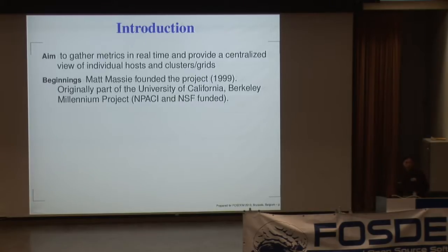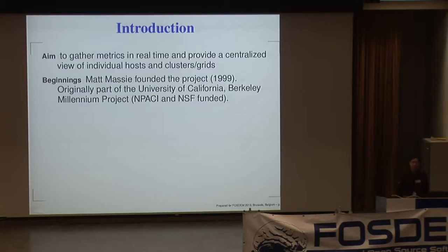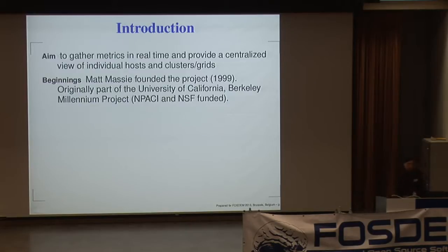The project started around 1999 by Matt Massey, at the University of California at Berkeley, as part of the Millennium Project — a project involved with building clusters and wanting to find out what the cluster was doing, like system load and things like that. Matt wrote this software and for the past 10 years, when you think of monitoring for clusters, you think of Ganglia. It's somewhat become the de facto standard for monitoring system resources.